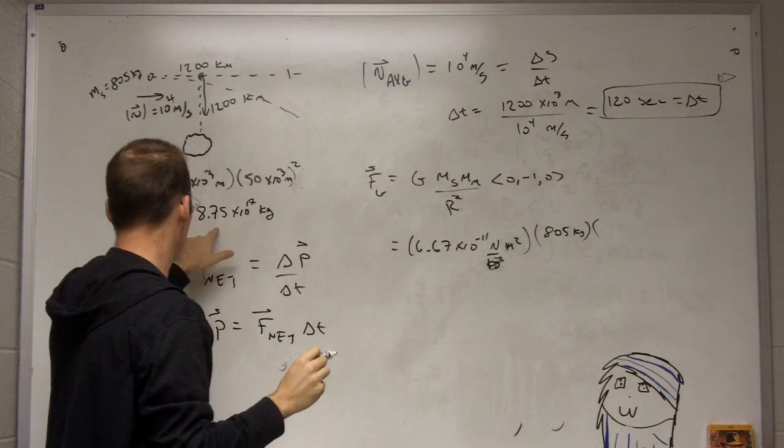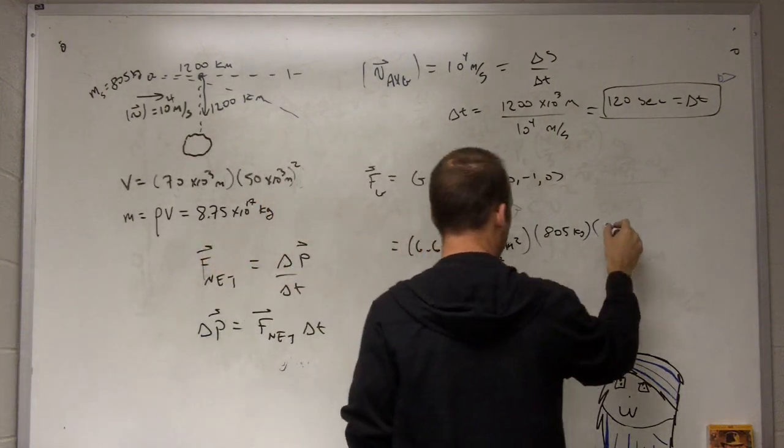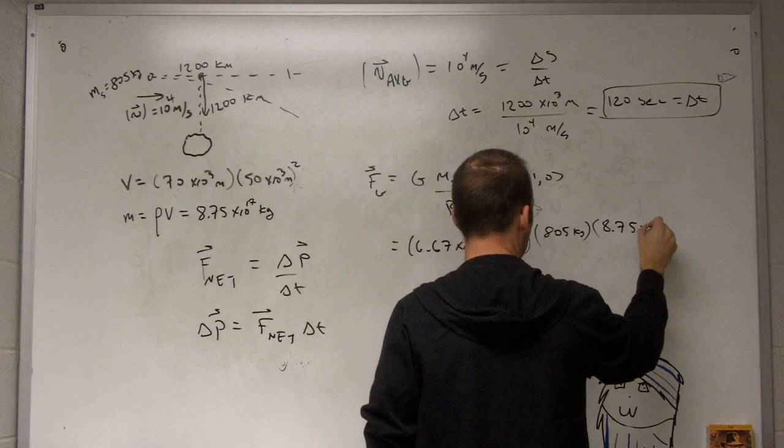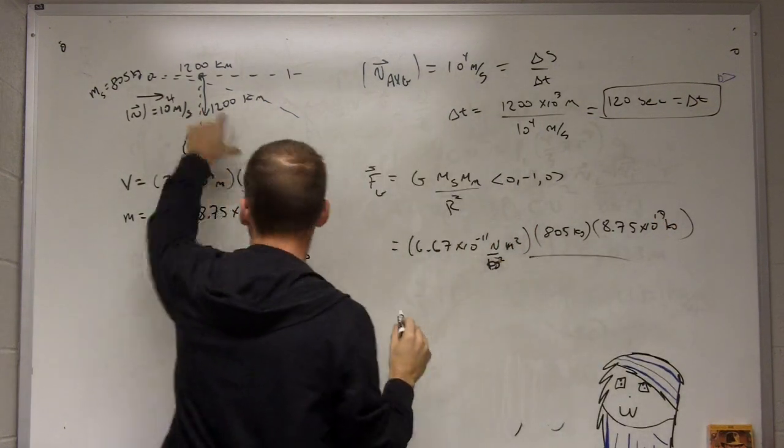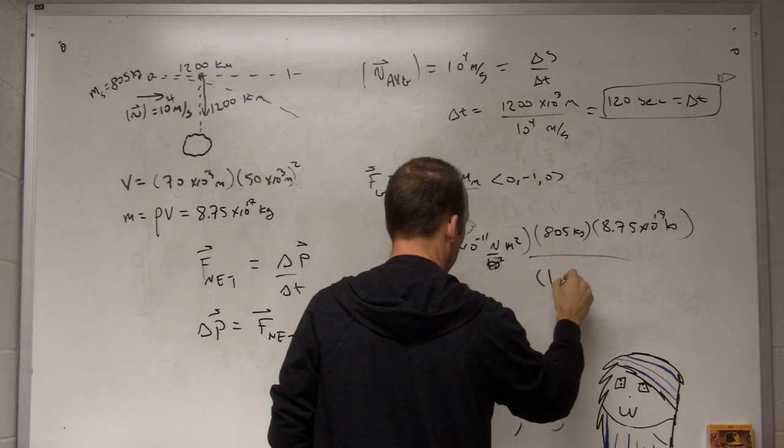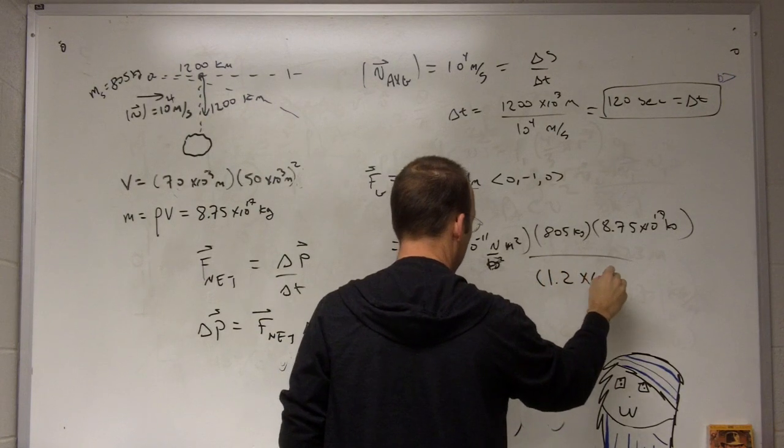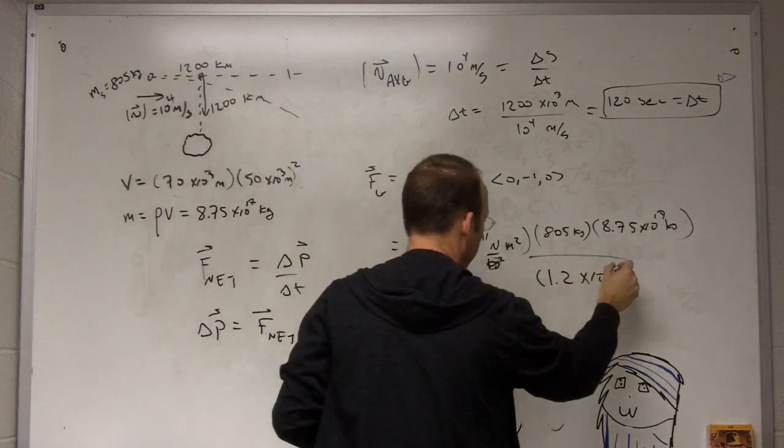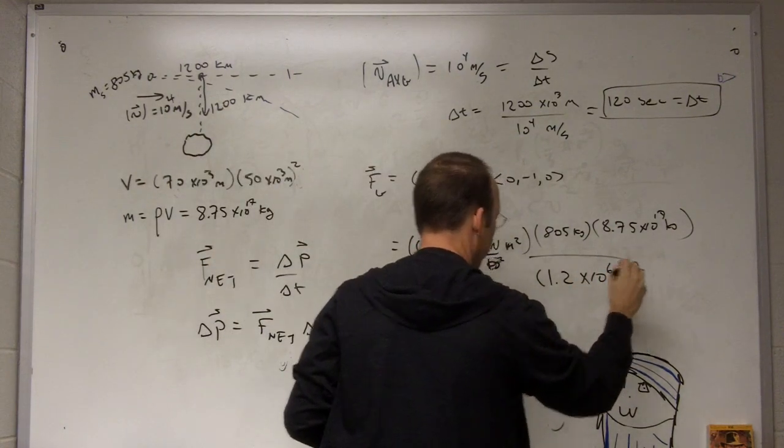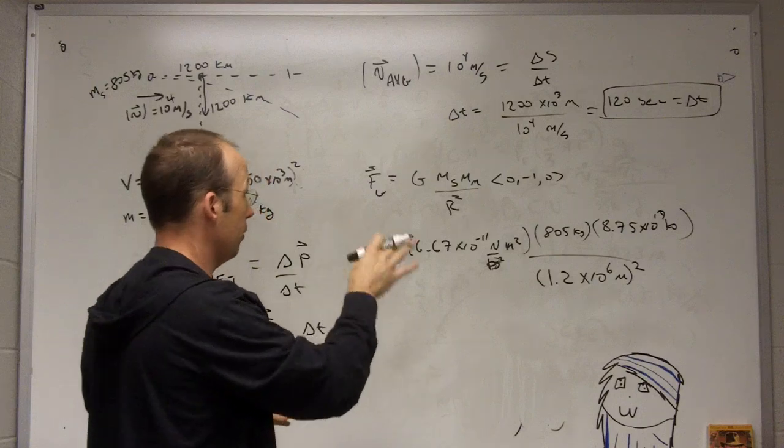The mass of Matilda I just calculated before is 8.75 times 10^17 kilograms. And then R is going to be 1.2 times 10^6 meters squared.